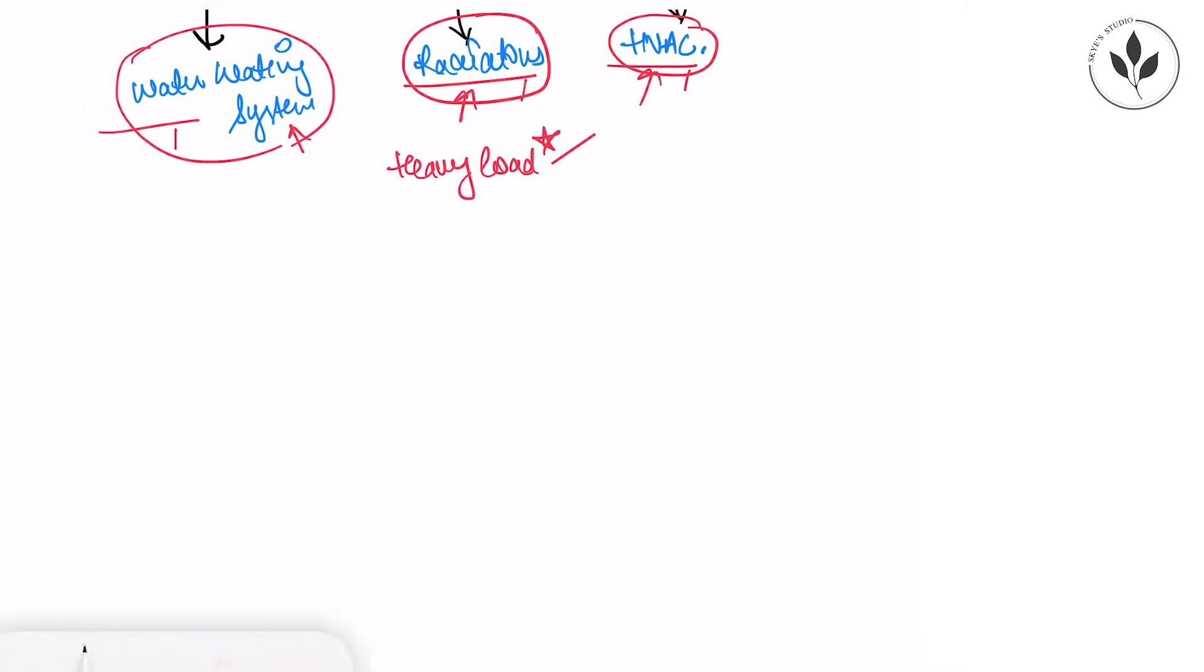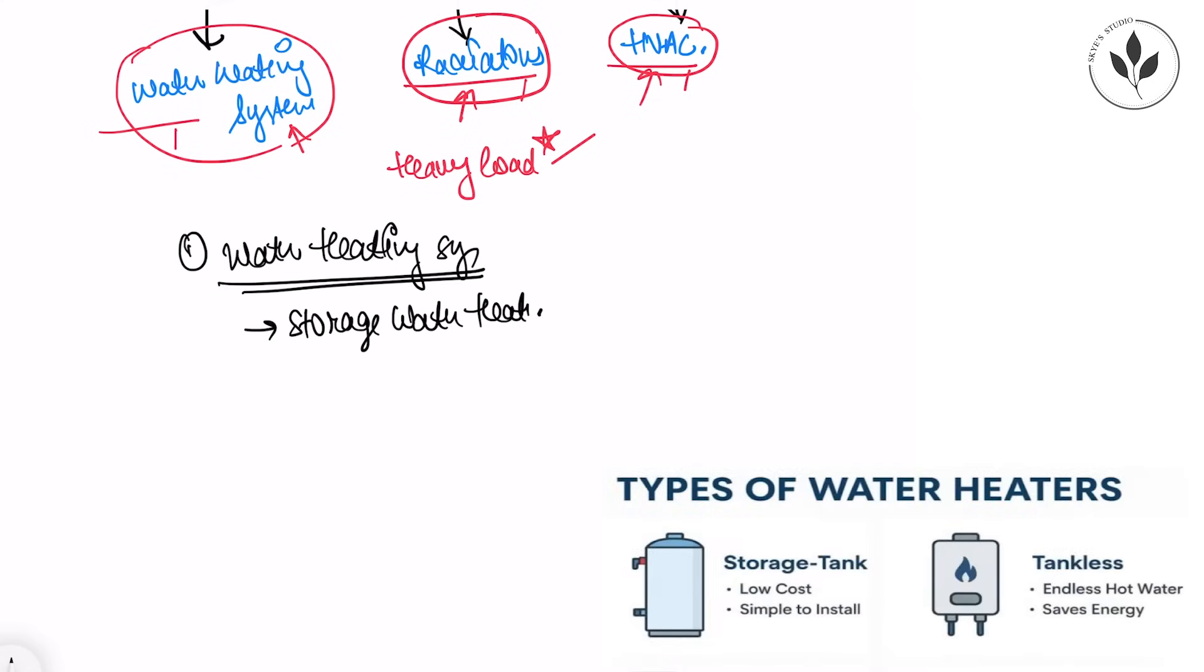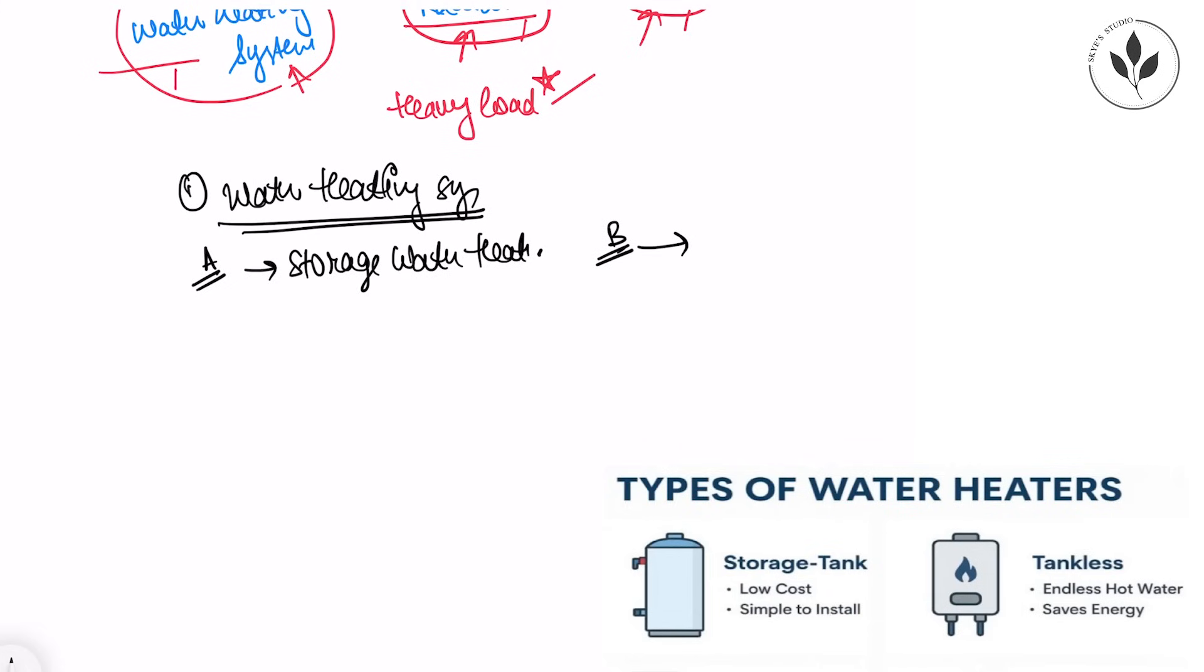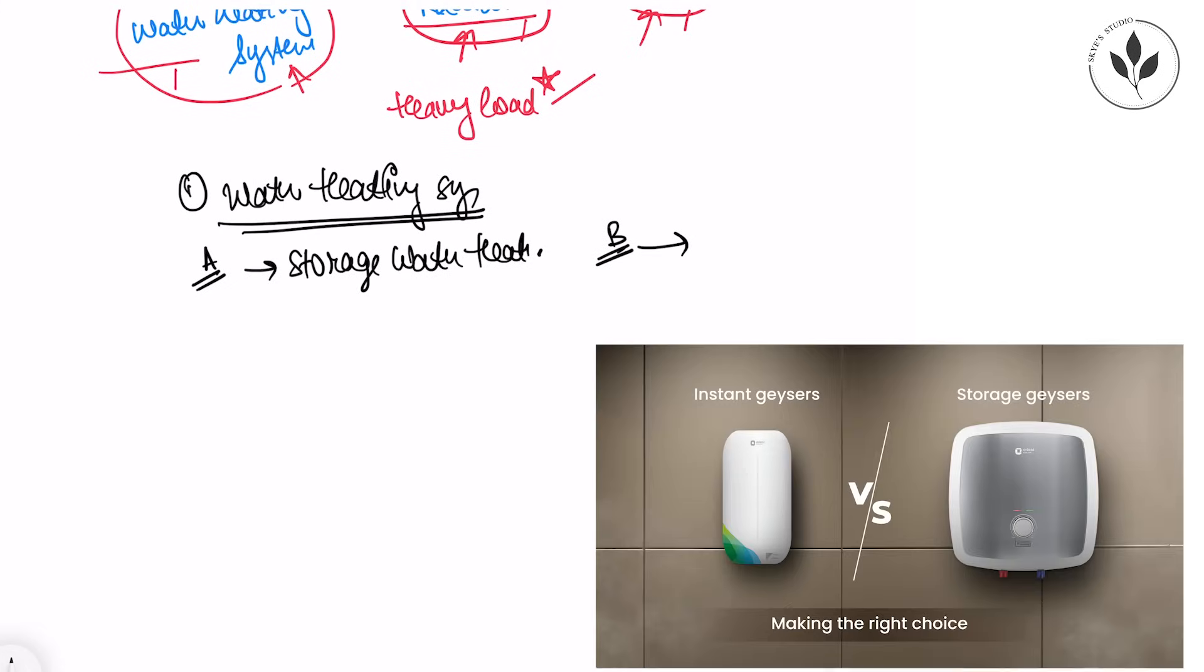Let's start with the very first one, which is your water heating system. In our water heating systems we have two to three types. The very first one is your storage water heater and the other one is tankless water heater. Let's study these two types together, because discussing them together will help you distinguish between both systems.